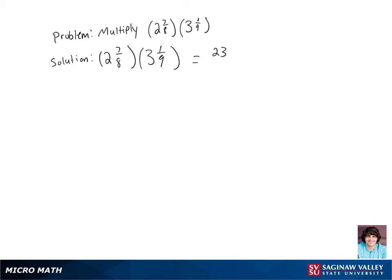2 and 7 eighths can be rewritten as 23 over 8, and 3 and 1 ninth can be rewritten as 28 over 9.